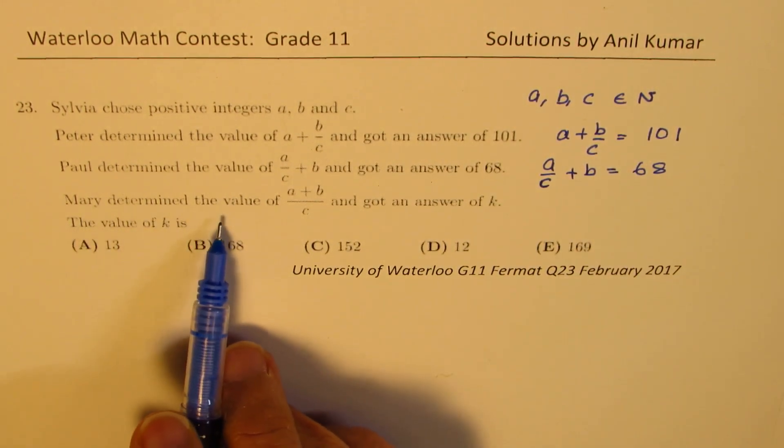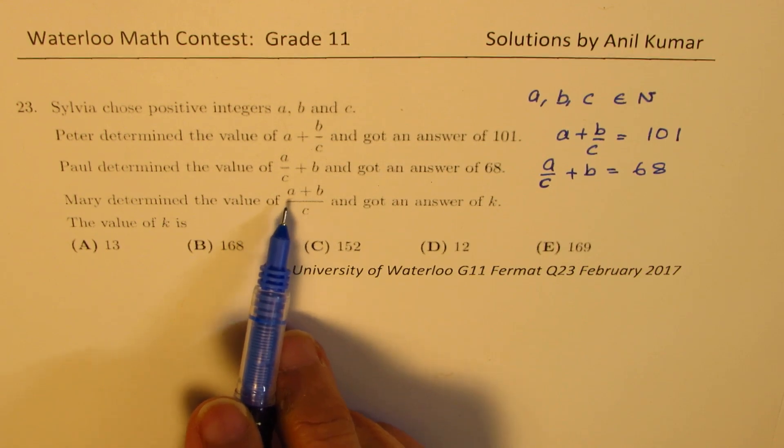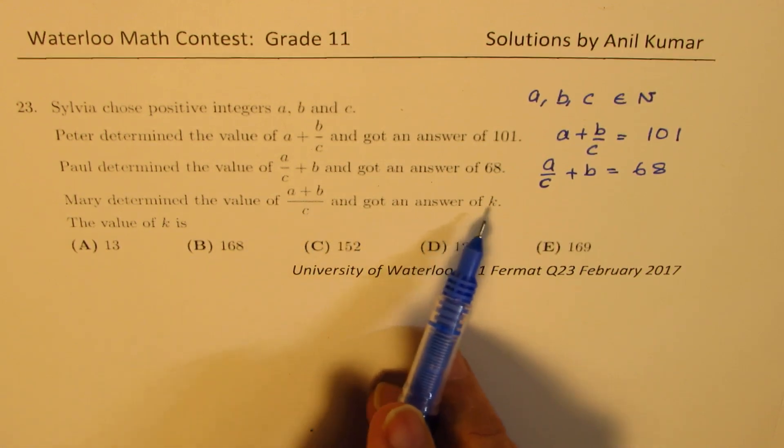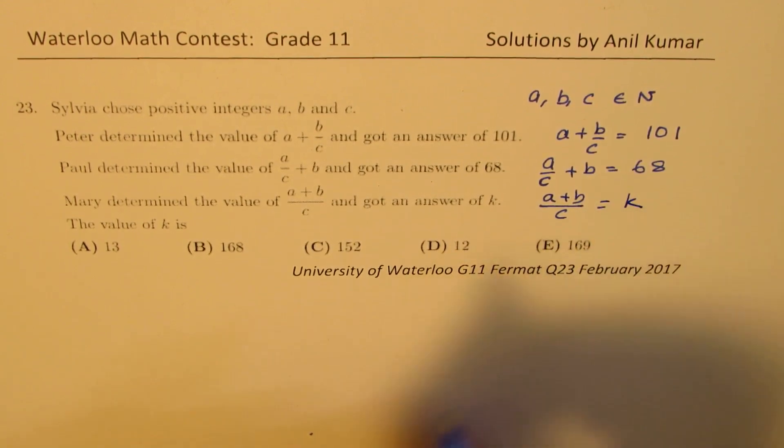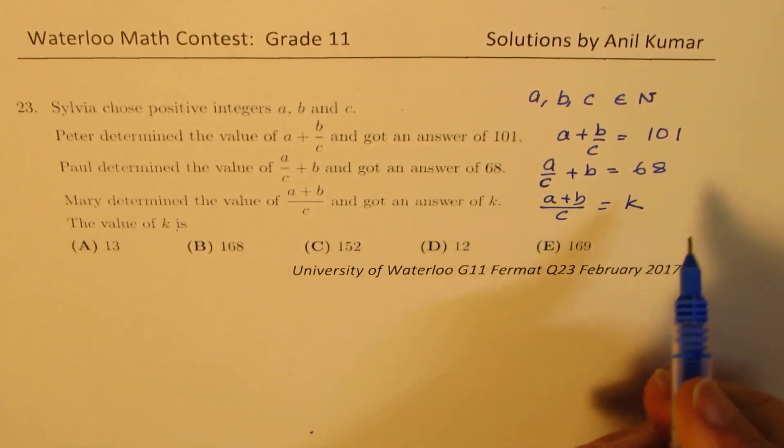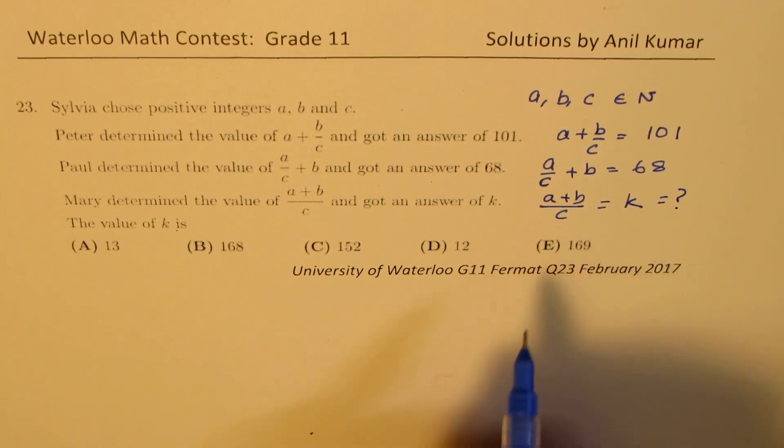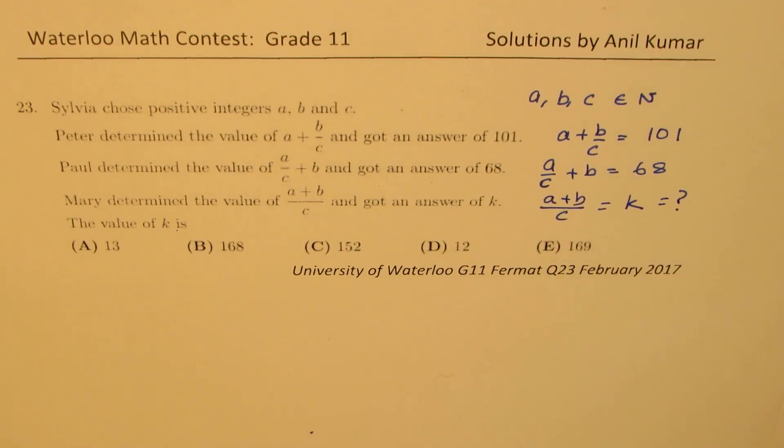And Mary determined the value of A plus B over C and got the answer K. So we have A plus B over C equals to K. The value of K is what? That is what you need to figure out. Five options are given to us. You need to find what is the correct option. So solve the question and then let's see who gets it first.